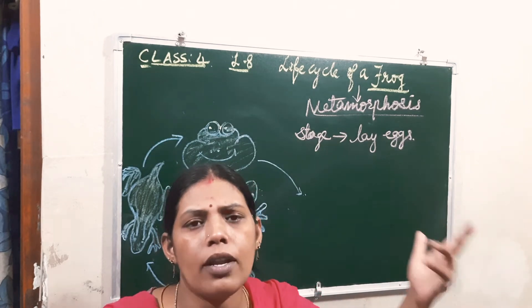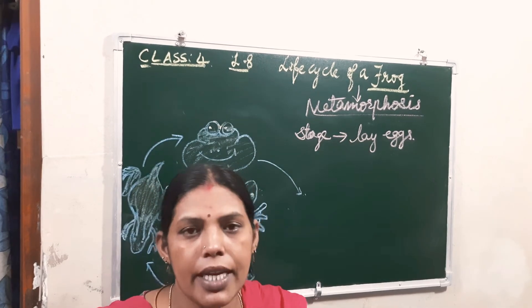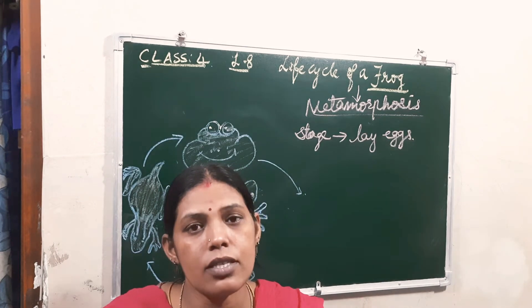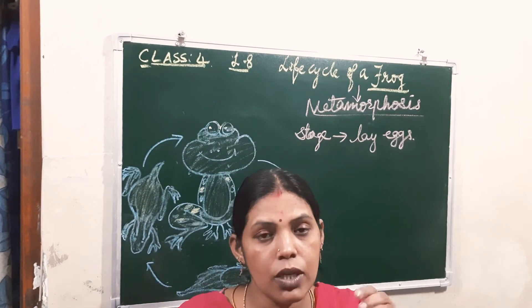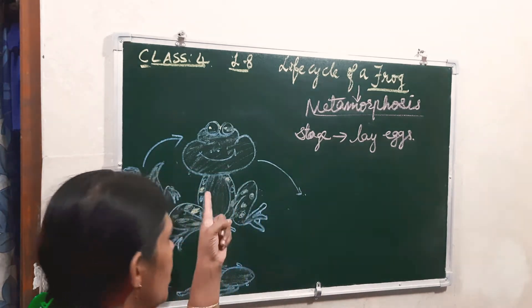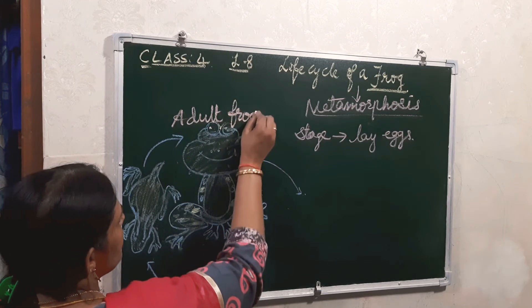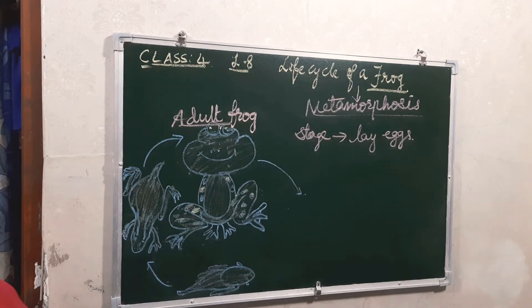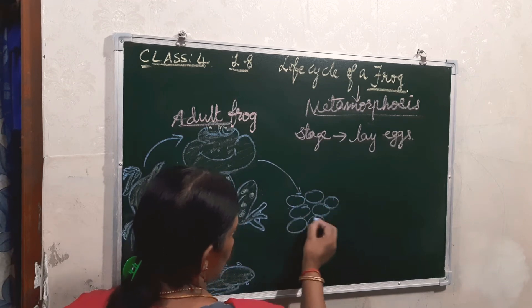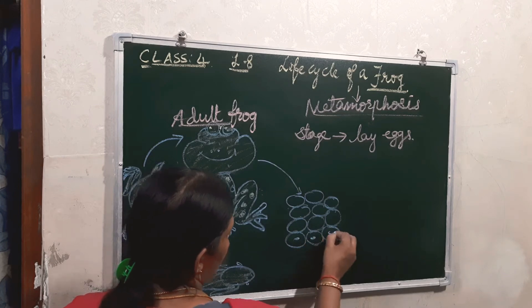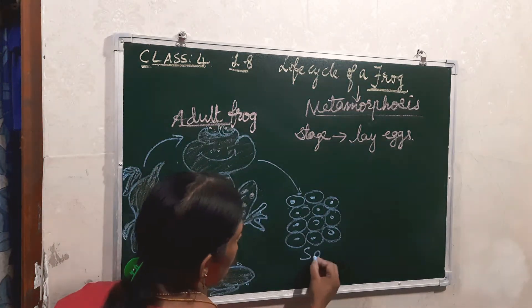Either in a pond, lake, or river — in water they lay the eggs. When they lay the eggs, hundreds of eggs together are laid. The group of eggs together is known as spawn. This adult frog lays hundreds of eggs together in water, and that is known as spawn.